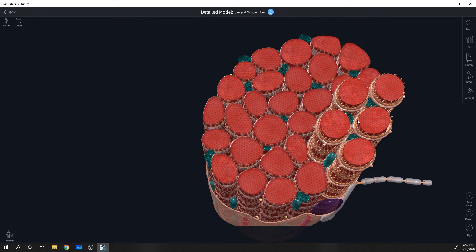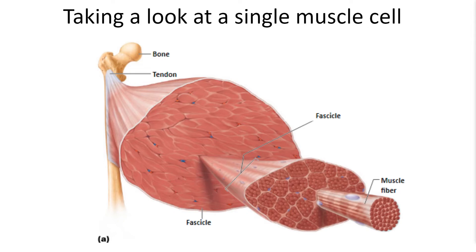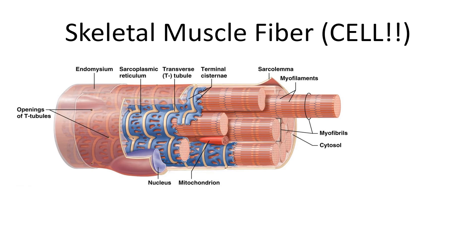Now we need to jump back into the slides to take an even closer look so that we can begin to understand the individual unit of contraction called a sarcomere. Here we see a segment of muscle off the bone that can be broken down into bundles called fascicles. Each of these fascicles are groups of muscle cells. An individual muscle cell is made up of a bundle of myofibrils wrapped in a sarcoplasmic reticulum.